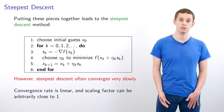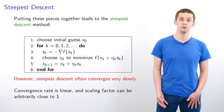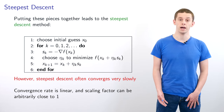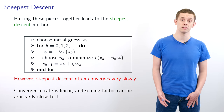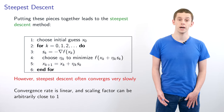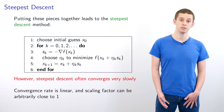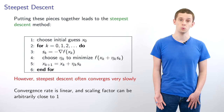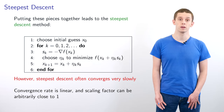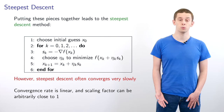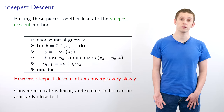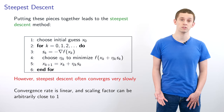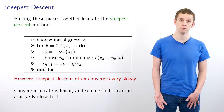Unfortunately, steepest descent can converge very slowly. The convergence rate is linear and the scaling factor can be arbitrarily close to 1. We'll now take a look at a Python example that will demonstrate some of these difficulties.